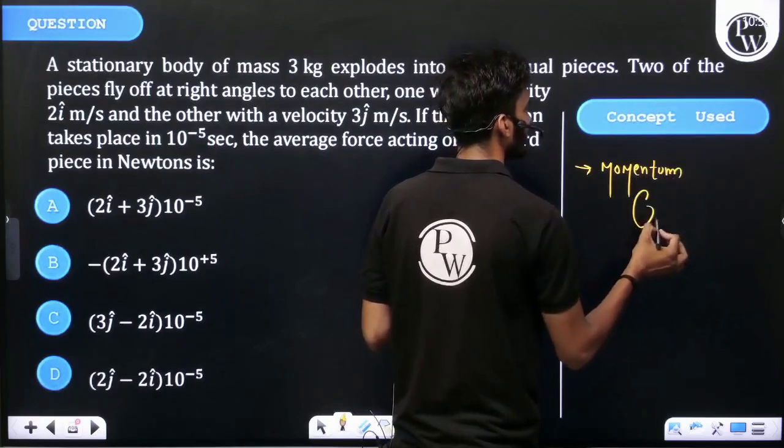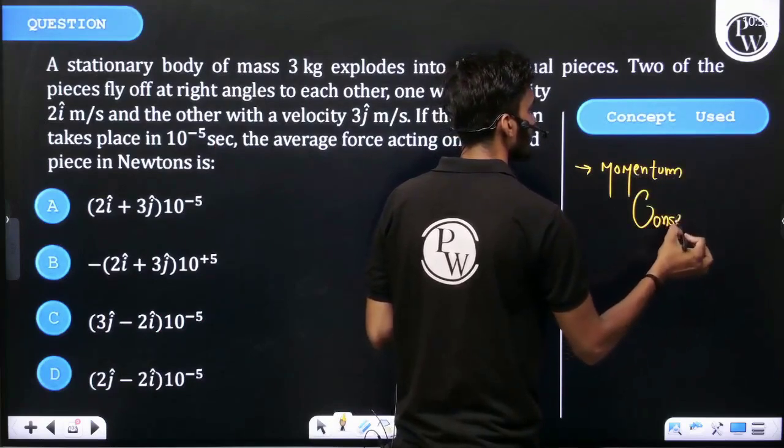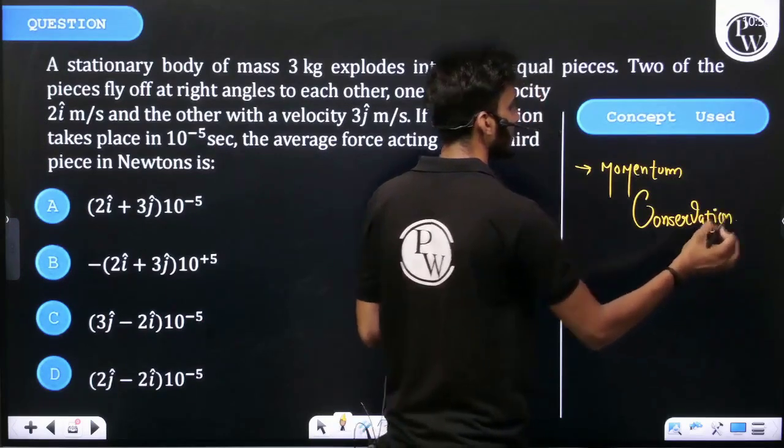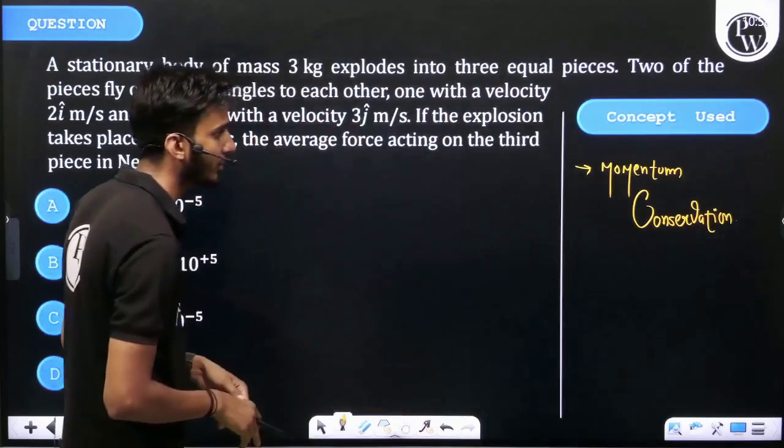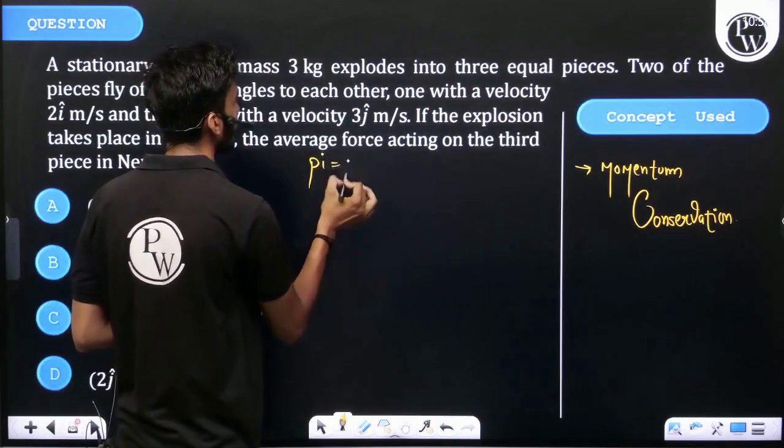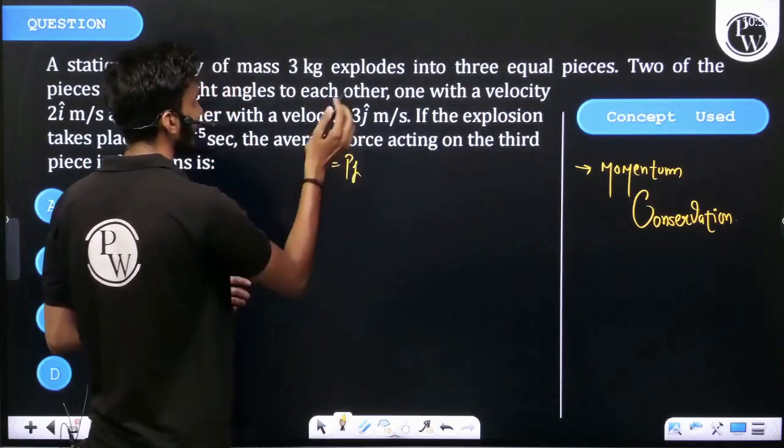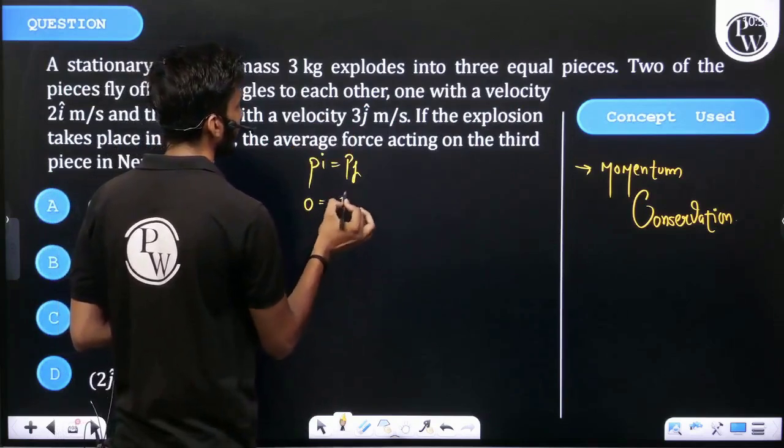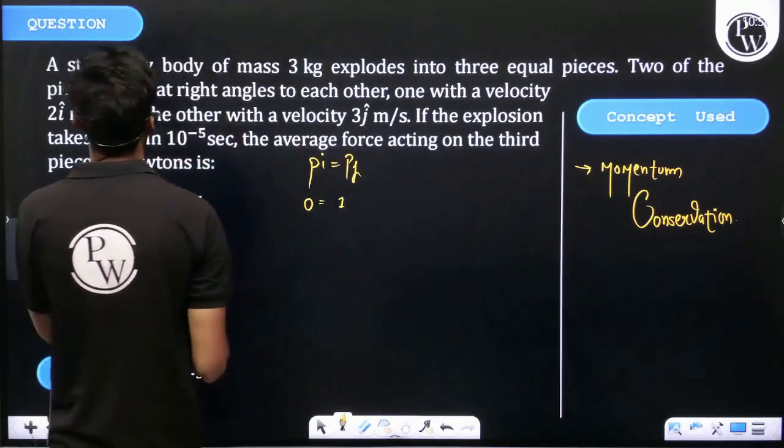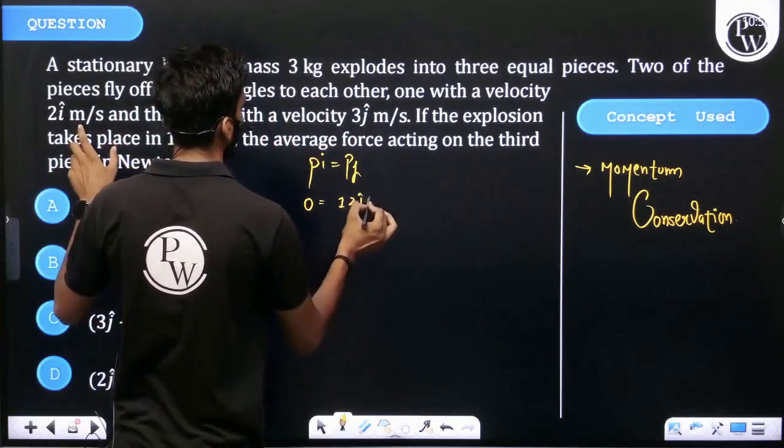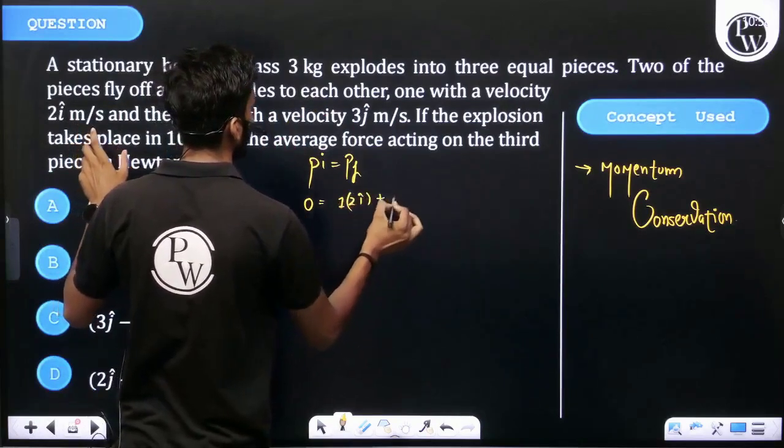Using momentum conservation, P initial equals P final. Initially, momentum is 0. One 1 kg piece has velocity 2i cap, another 1 kg piece has velocity 3j cap.